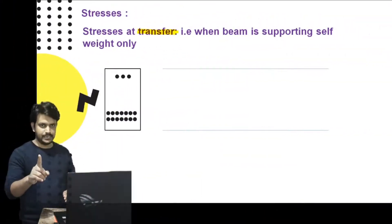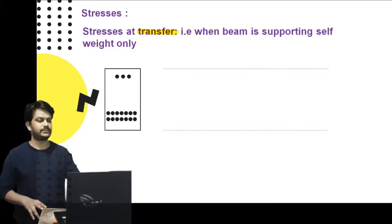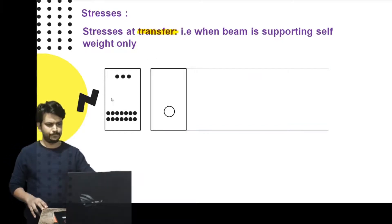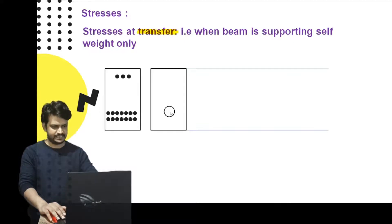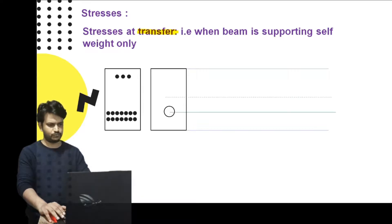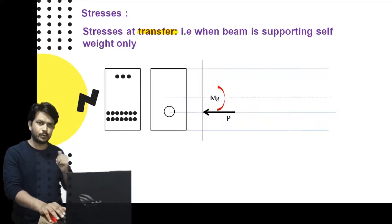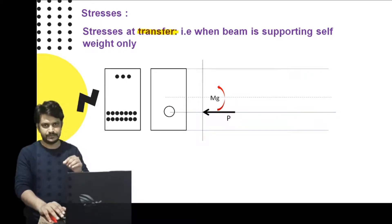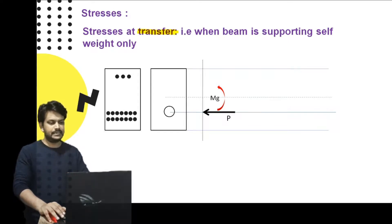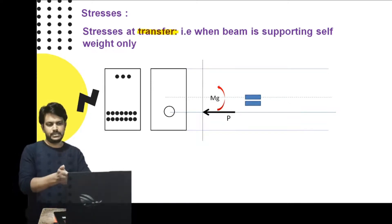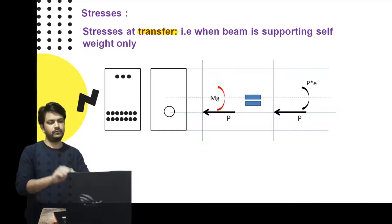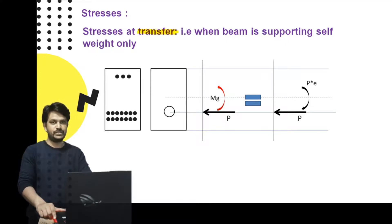Back to the solution — stress at transfer means the beam is supporting self-weight only. The complex cross-section is converted to a simple one: the resultant pre-stressing force lies at 50 mm from the neutral axis, i.e., eccentricity e = 50 mm. The pre-stressing force P = 3 × 10⁵ N acts at this eccentricity, and there is a dead load moment Mg acting as a sagging moment.